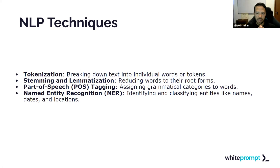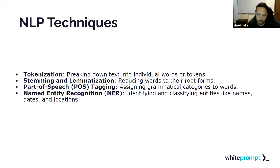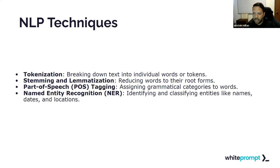Some techniques of natural language processing are: tokenization, which is breaking down text into individual words or tokens; stemming and lemmatization, which is reducing words to their root forms; part-of-speech tagging, which is assigning grammatical categories to words; and named entity recognition, which is identifying and classifying entities like names, dates, and locations.